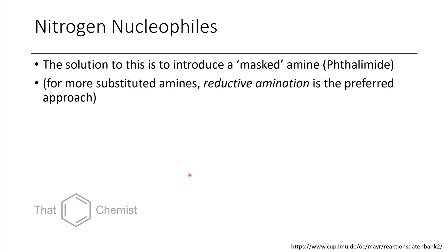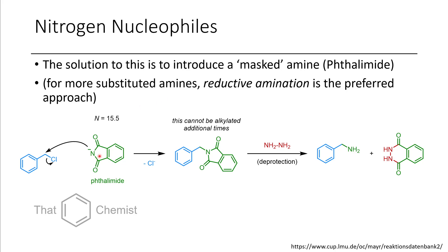The solution is to use a masked amine — something that will only react once. Phthalimide tends to be the nucleophile we employ for this purpose. Phthalimide approaches as the nucleophile, displacing chloride as the leaving group. Phthalimide has a relatively high nucleophilicity of 15.5, forming benzyl phthalimide as the product. When we want to unmask our amine, we treat it with hydrazine. Hydrazine attacks at the carbonyls, forming a byproduct as well as our benzylamine. The only disadvantage is we have to use hydrazine, which is relatively toxic.